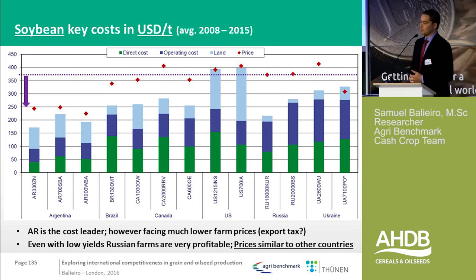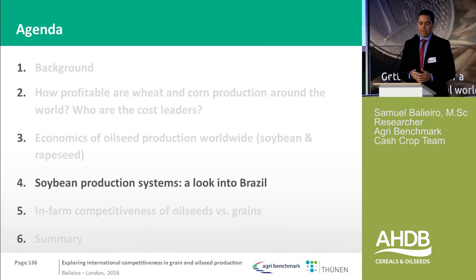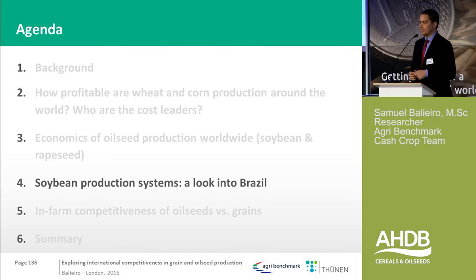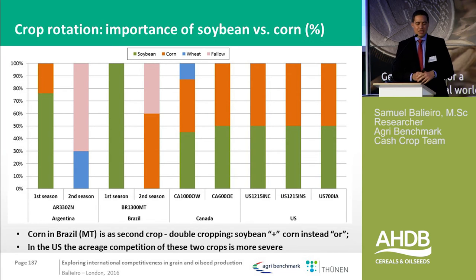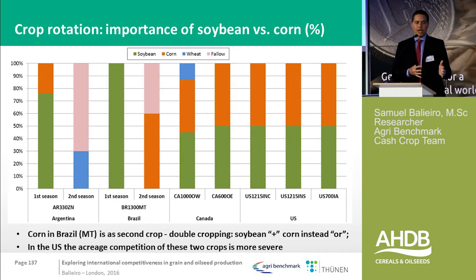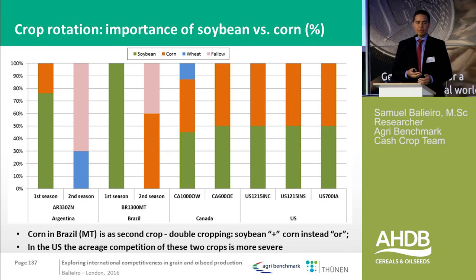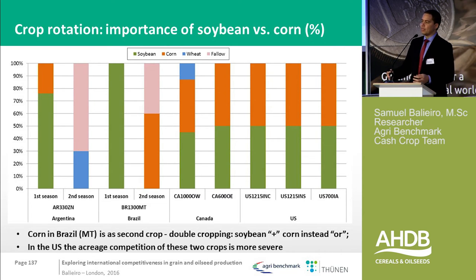As I was asked to give some insights into Brazil — soybean production in Brazil is interesting. Most of the places we have soybeans, we have a second-season corn which comes afterward. This is similar to Argentina, where they can also produce two crops. So when we talk about farm competitiveness, we should look at this system as soybean plus corn, not soybean or corn as is the case in the US.